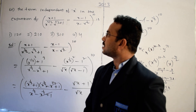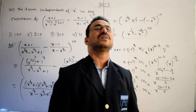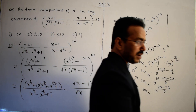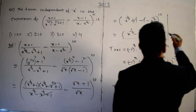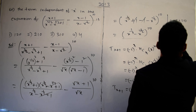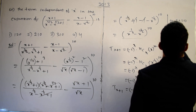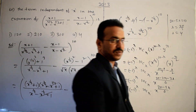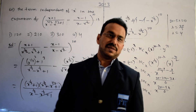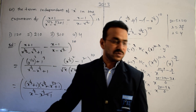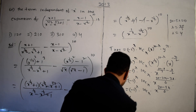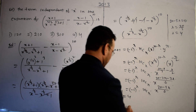For the term independent of x, we need the exponent of x to be 0: (20 - 5r)/6 = 0, so 20 - 5r = 0, giving r = 20/5 = 4. For r = 4, we get the independent term in the given expansion.